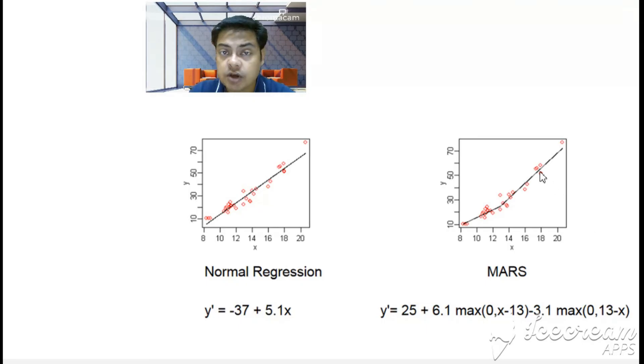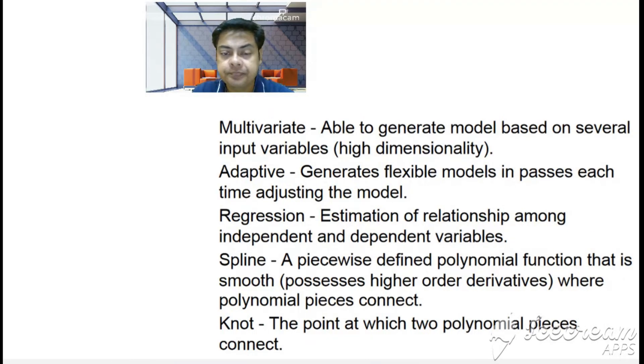If there were two knots, obviously there would be a third equation which would add into this part. I'm trying to keep it simple so that everyone can understand.